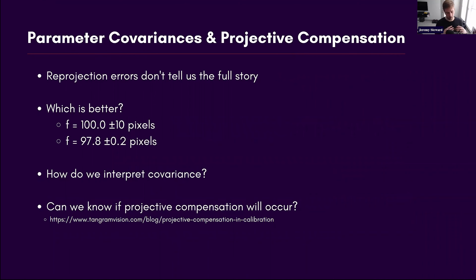So we've talked about how to design the object space and how to remove or identify systematic errors. One last point: parameter covariances and projective compensation. A lot of times we look at reprojection errors to see if systematic effects exist within the optimized coordinates of our object space, but reprojection errors don't tell us everything — because they're inherently meant to be small.